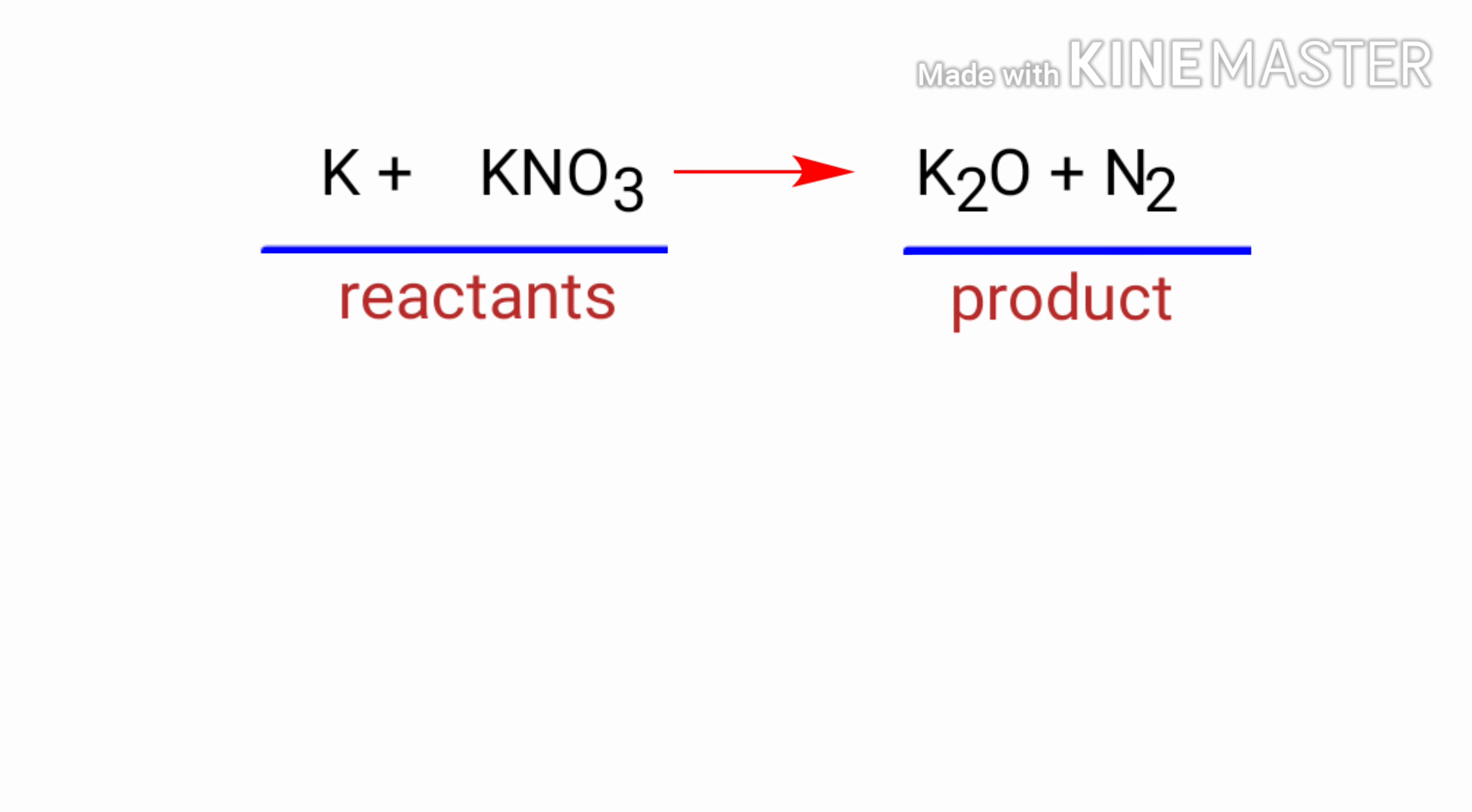In this equation, the reactants are potassium and potassium nitrate and the products are potassium oxide and nitrogen. If you look at this equation, the equation is not balanced.